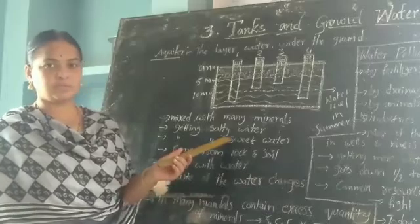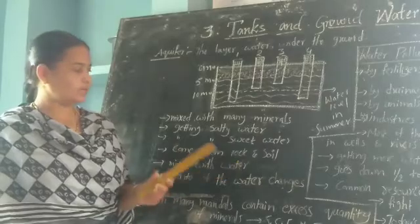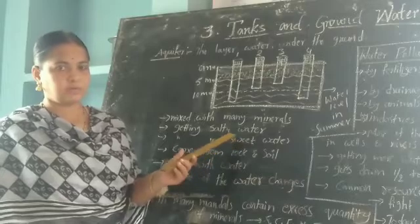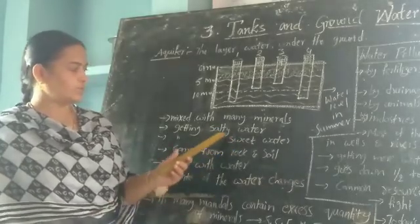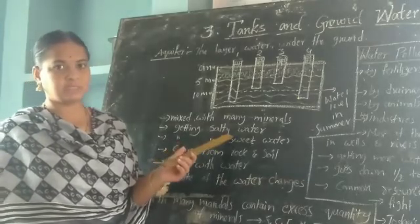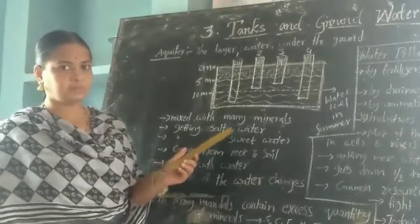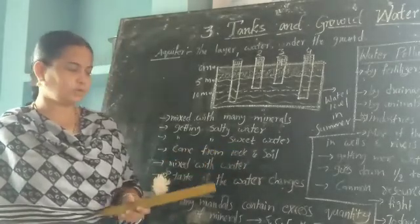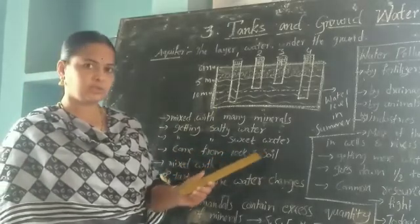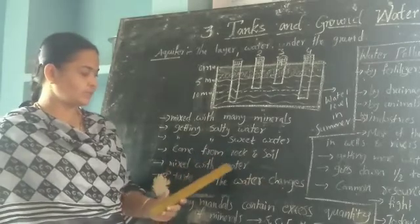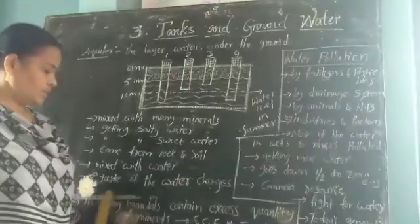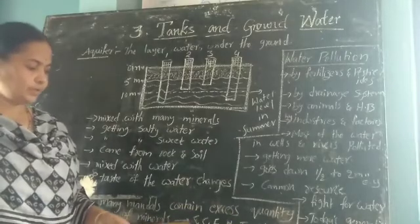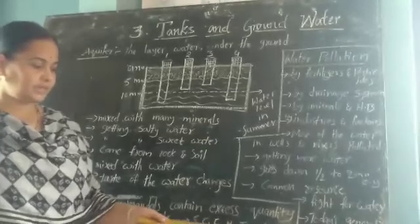Where can we find salty water? Very near to the seas and oceans we are getting salty water. Where can we find sweet water? Very near to the rivers, ponds and lakes we are getting sweet water. Why? Because in some places an excess quantity of minerals is dissolved, so we get salty water; in other places the mineral content is low, so we get sweet water. These minerals come from rocks and soil underground and change the taste of the water. Examples of such minerals include sodium, chloride, fluoride, nitrate and iron.